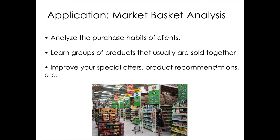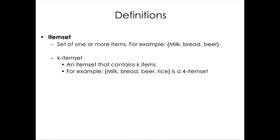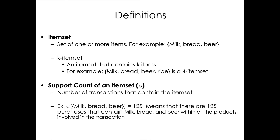Understanding how people buy and what products are sold together is one of the main applications of association rule mining. Some definitions: an item set is a set of one or more items, for example milk, bread, and beer — that's an item set of size 3. A k-itemset is an item set containing k items, for example milk, bread, beer, and rice is a 4-itemset. The support count of an item set is the number of transactions that contain that item set — for example, if milk, bread, and beer appear in 125 transactions, that is its support count.